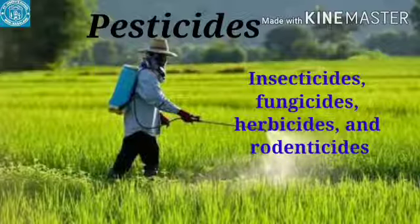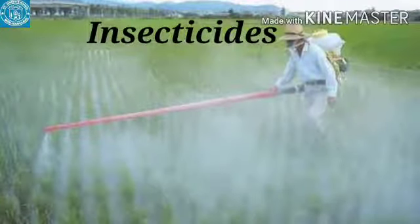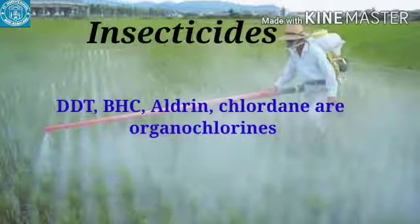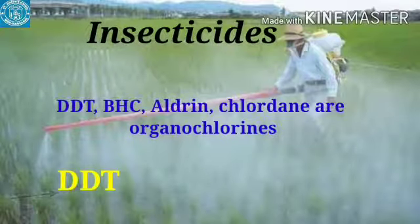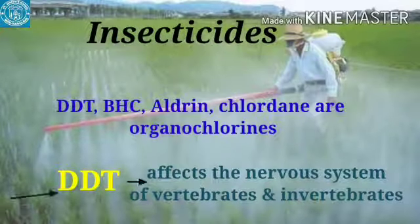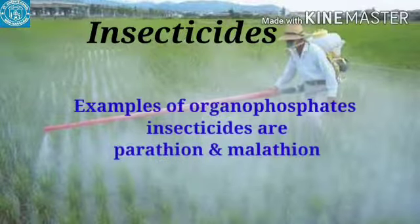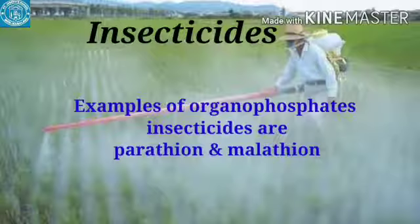Insecticides are used to kill insects which spoil crops. There are three types of insecticides: organophosphates, organochlorines, and carbamates. Compounds like DDT, BHC (benzene hexachloride), aldrin, and chlordane are organochlorines and find the maximum use. DDT is a common insecticide that affects the nervous systems of both vertebrates and invertebrates; this compound is not easily biodegradable and therefore is not environmentally friendly. Examples of organophosphate insecticides are parathion and malathion.